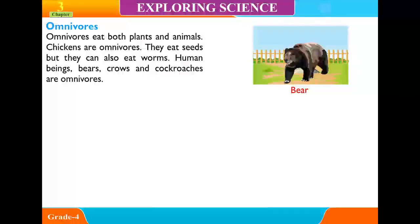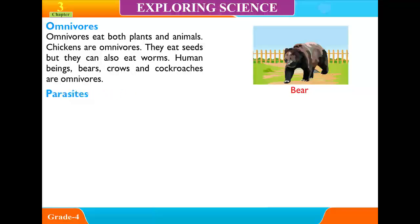Omnivores. Omnivores eat both plants and animals. Chickens are omnivores — they eat seeds but they can also eat worms. Human beings, bears, crows, and cockroaches are omnivores.